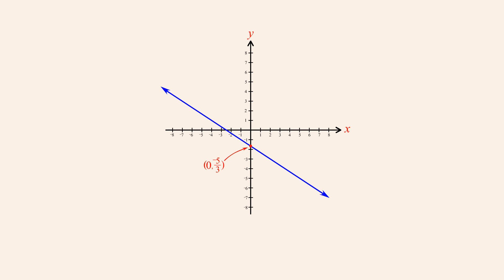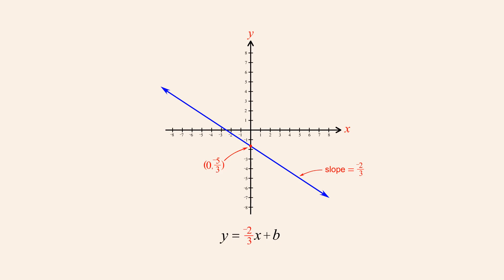Since we know the y-intercept, if we like, we can now write the equation for this line in slope-intercept form. We already know that the slope is negative two-thirds, so we assign this value to the constant m.